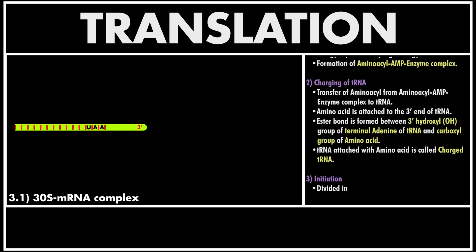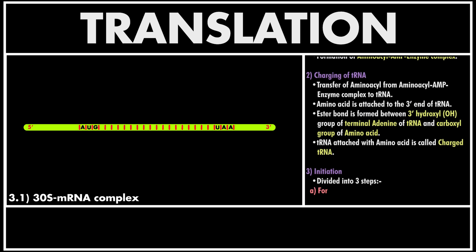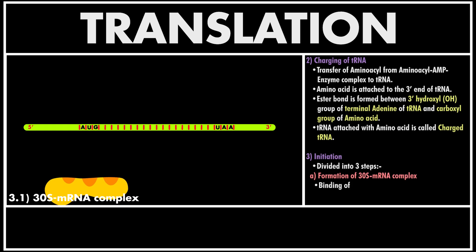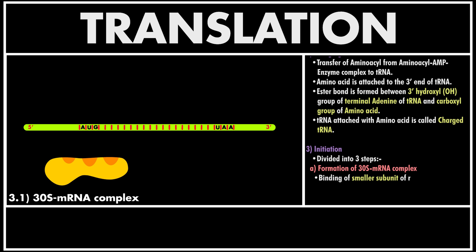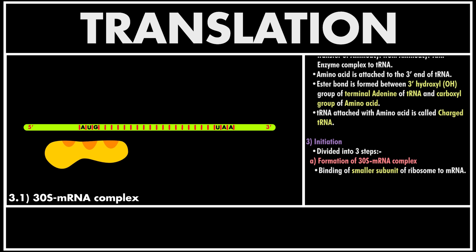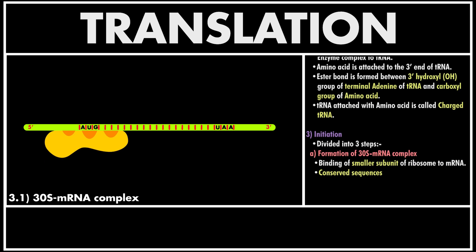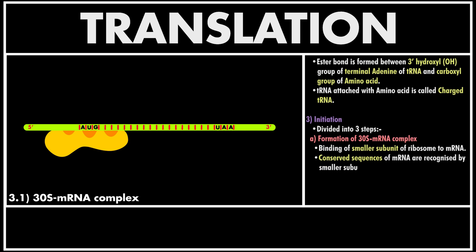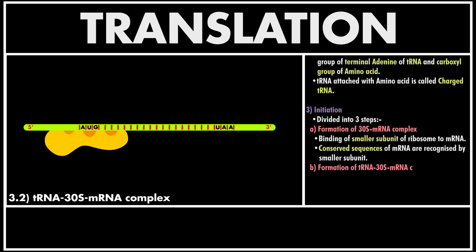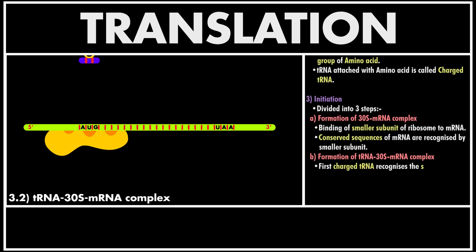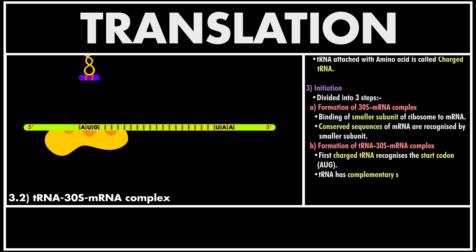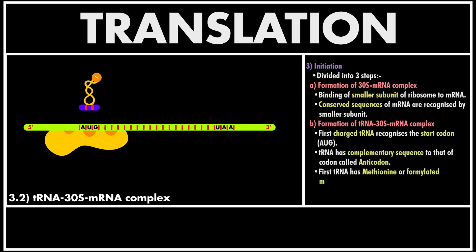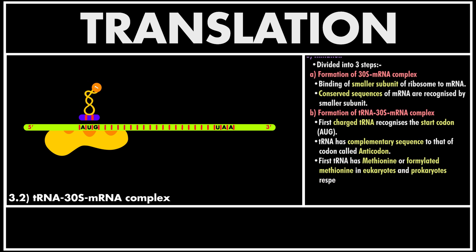The third step is initiation, which is a fairly complex process, so it is divided into three sub-steps. The first is binding of the smaller subunit of ribosomes to the mRNA by recognizing the conserved sequences of mRNA, leading to formation of mRNA and smaller subunit complex. The second is attachment of initial aminoacyl tRNA having methionine or formylated methionine to the start codon of mRNA. The complex thus formed is called the 30S mRNA-tRNA complex.